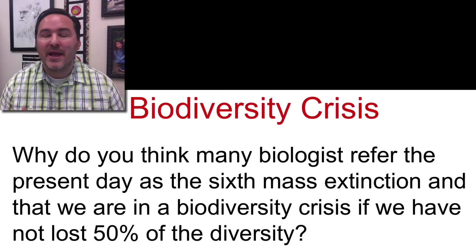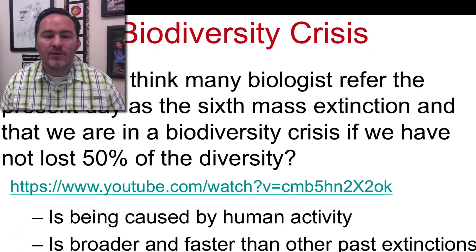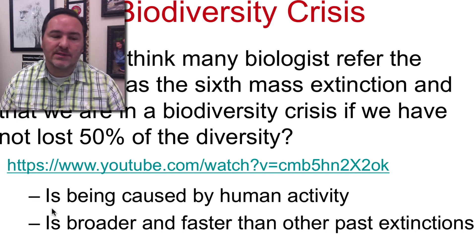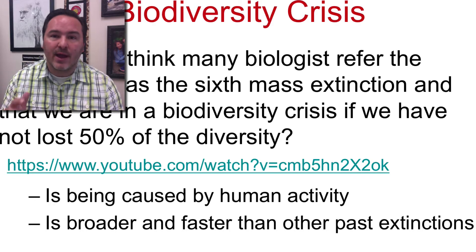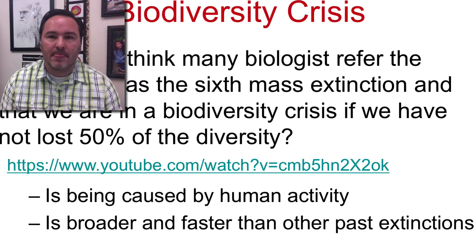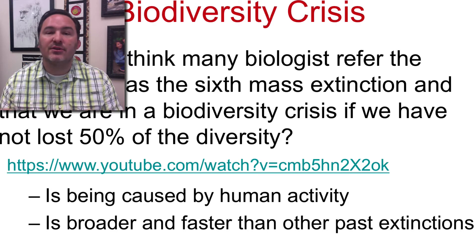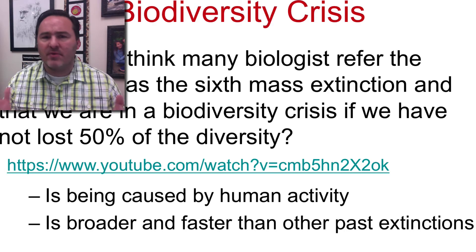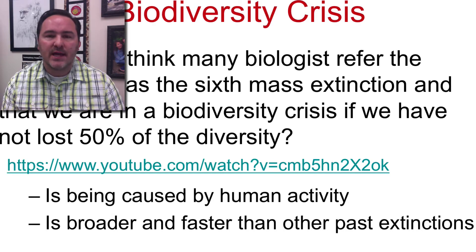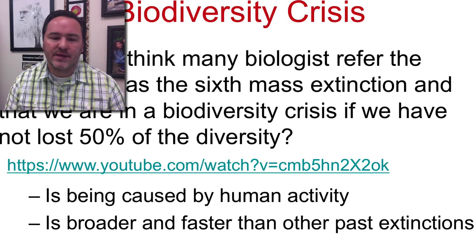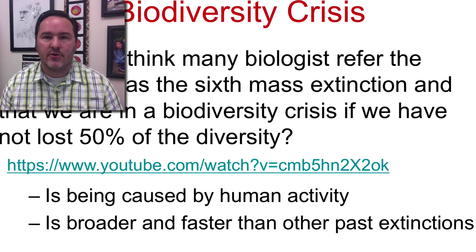Now that you've watched this video, were you able to pick out some of the main reasons why we are in a current biodiversity crisis? Hopefully you were able to pick out that the two main reasons are that currently the extinction rates and the extinctions that are happening right now are mostly due to human activity. This is a case where one species on the planet is causing the extinction and the decline of many, many other species, and that's never been seen before. The second thing is the scale and the speed — it's broader and faster than any of the other past extinctions.